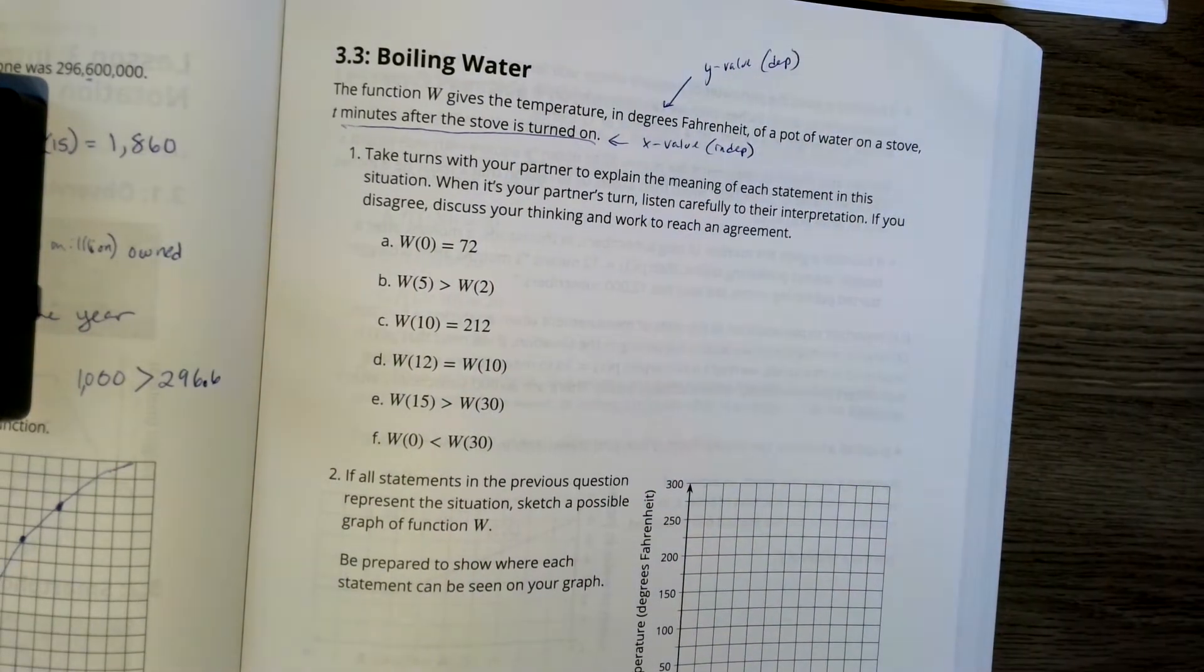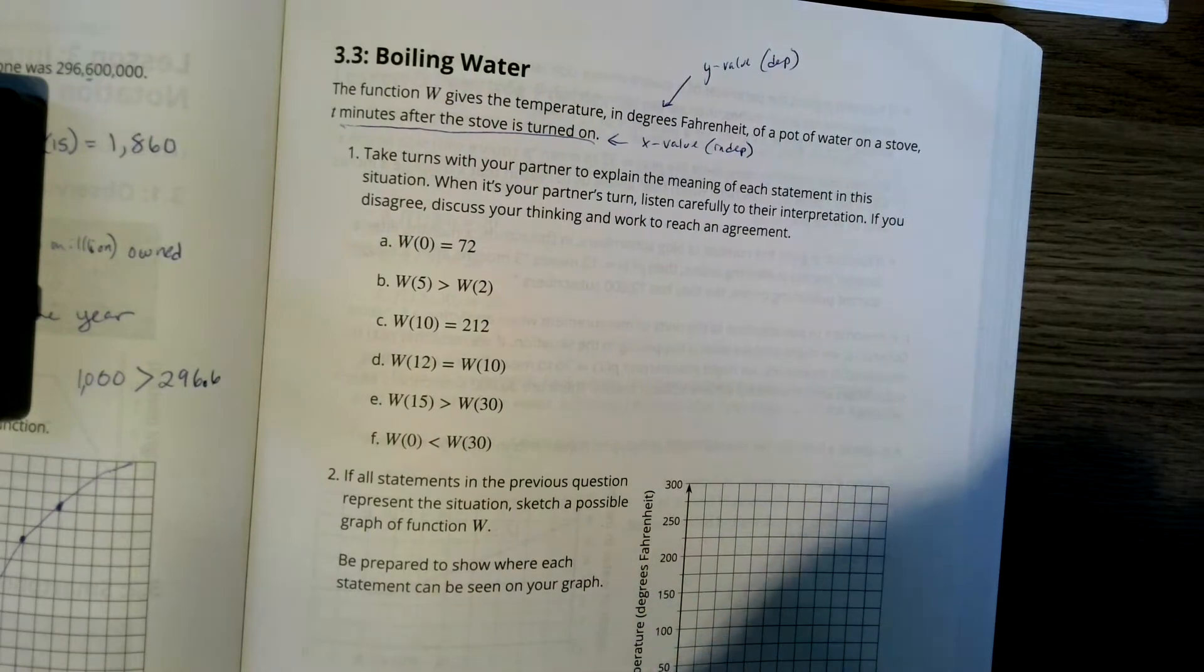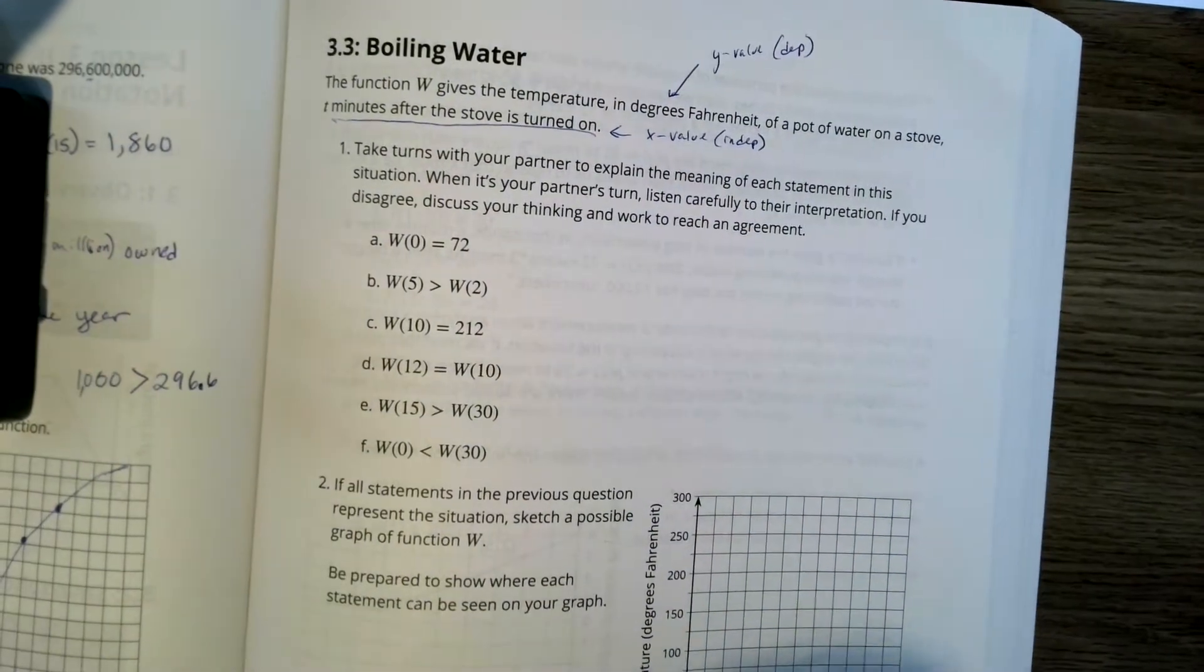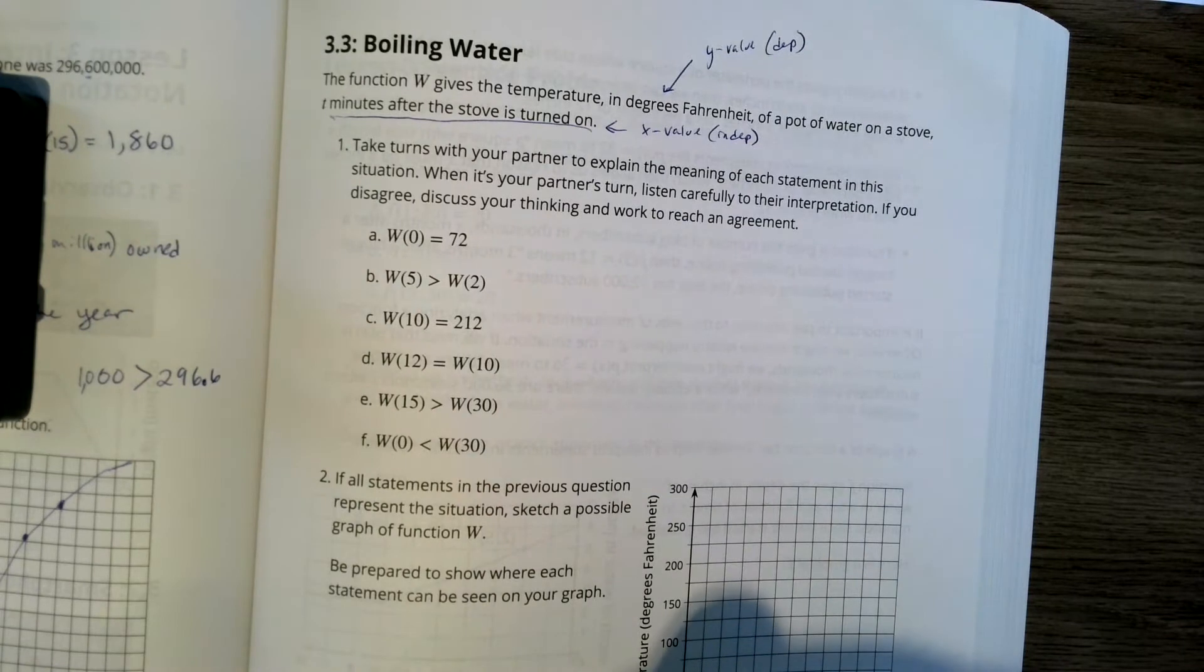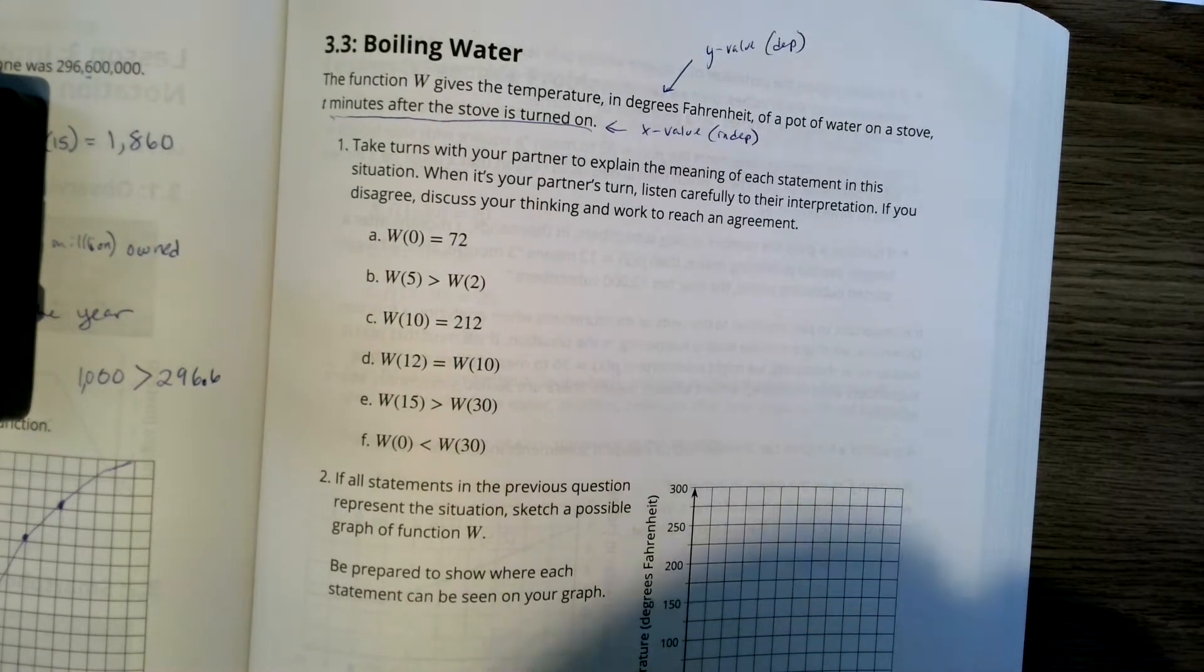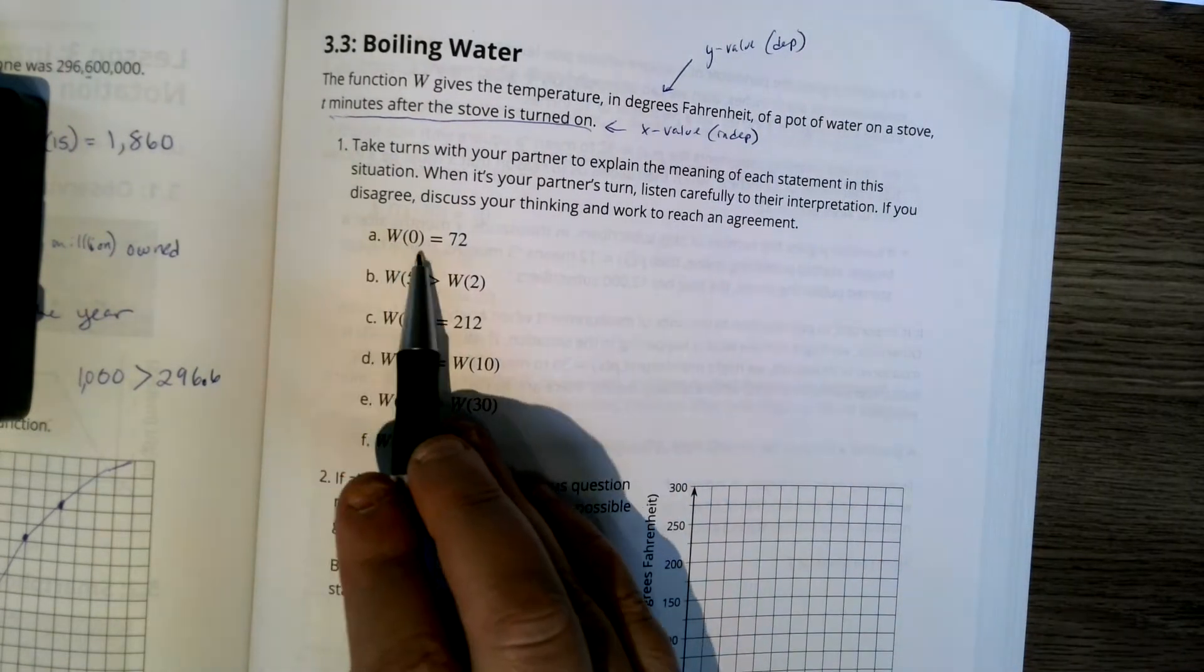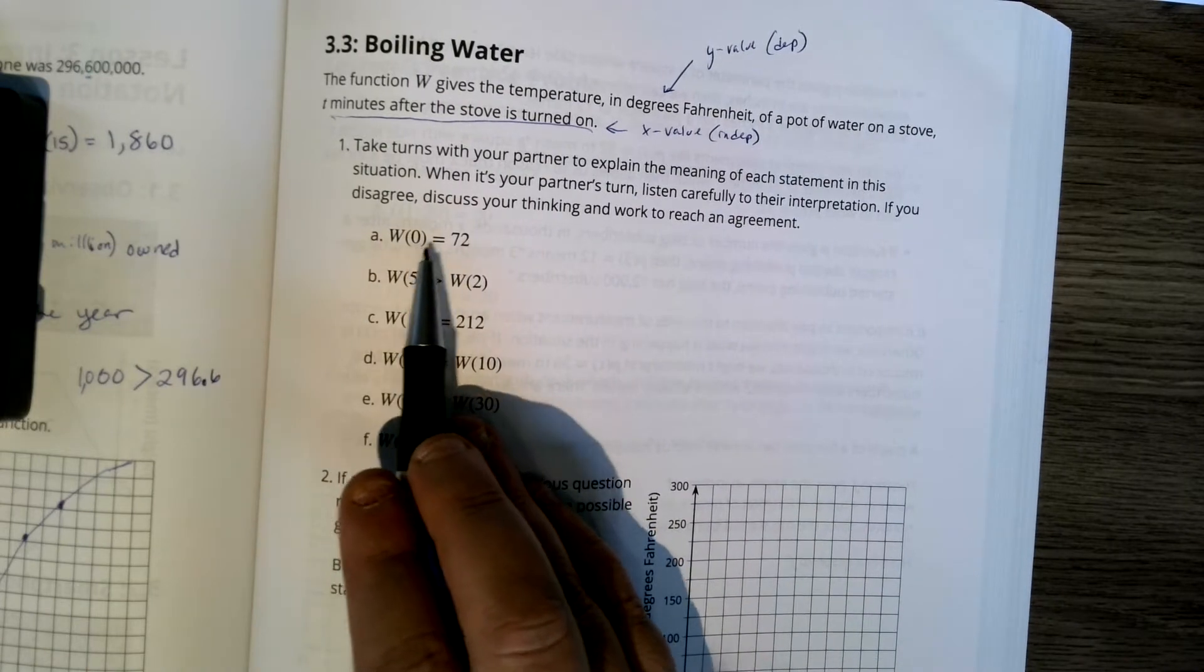It says take turns with your partner. Obviously we cannot do that, but you're going to explain the meaning of each statement in this situation. So what this says is W of 0 equals 72.